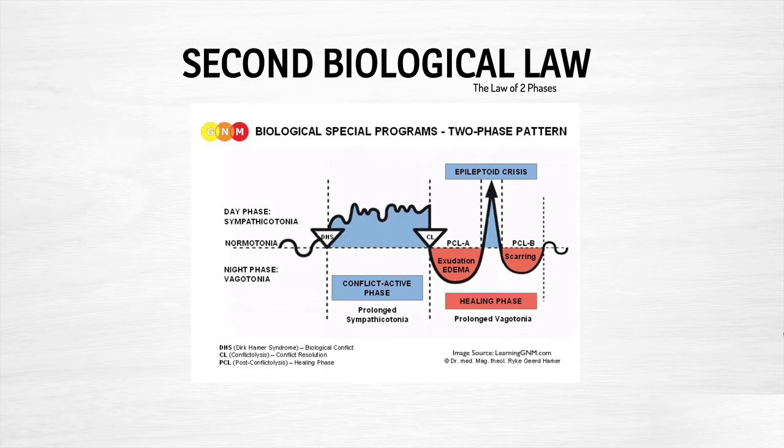The second biological law describes what happens when you have this type of conflict. There is a two-phase pattern to all biological special programs. Normally our bodies shift from sympathetic active, sympathetic tonia during the day with a higher heart rate, and then in the evening everything shifts to parasympathetic rest-digest dominance — that's the normal day-night rhythm. The moment you have a conflict, the moment of the DHS, that day-night rhythm breaks and you go into prolonged sympathetic activity.